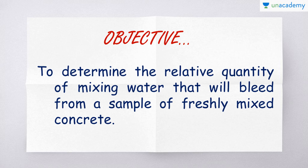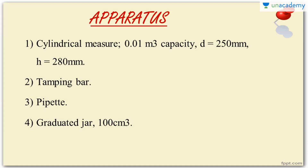Now, let's move on to the experiment itself. First and foremost, the objective of the experiment. The main objective is to determine the relative quantity of mixing water that will bleed from a sample of freshly mixed concrete. In very simple language, our aim is to determine the amount of water that comes out of the concrete matrix as bleeding.